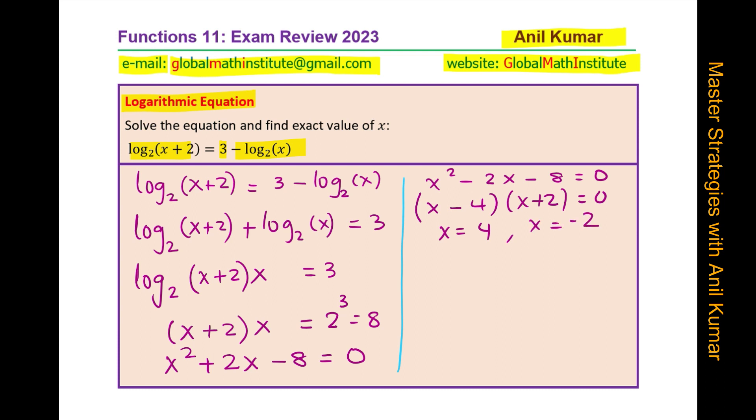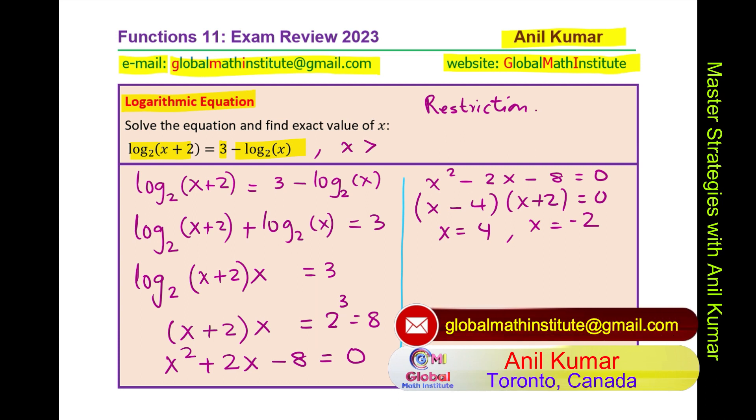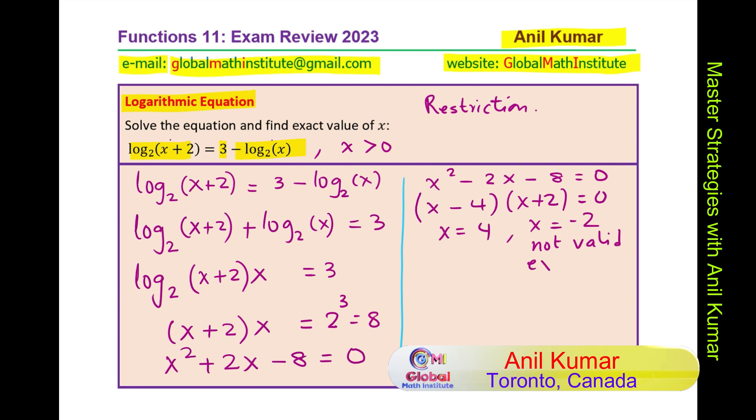Now clearly x equals 4 is the answer. x cannot be equal to minus 2 because we have a restriction, right? So you should actually look into the restrictions when you solve logarithmic equations. The restrictions here are that x should be greater than, this says minus 2 and this is 0. So it should be greater than 0. So that is not valid. It is called an extraneous solution.